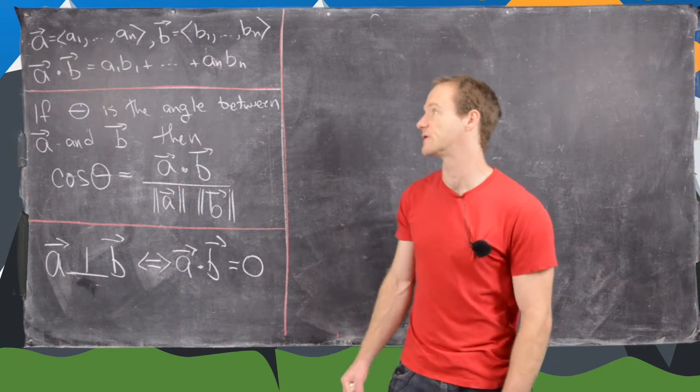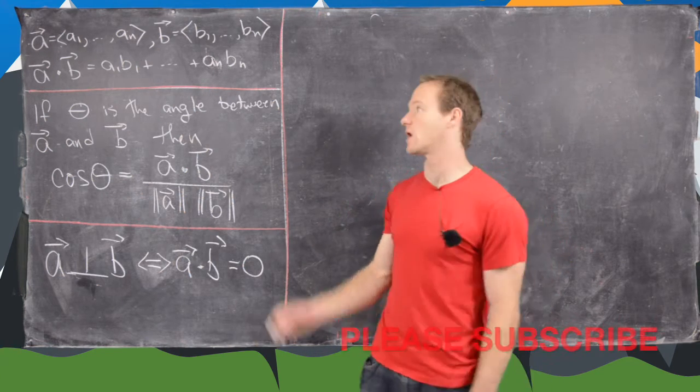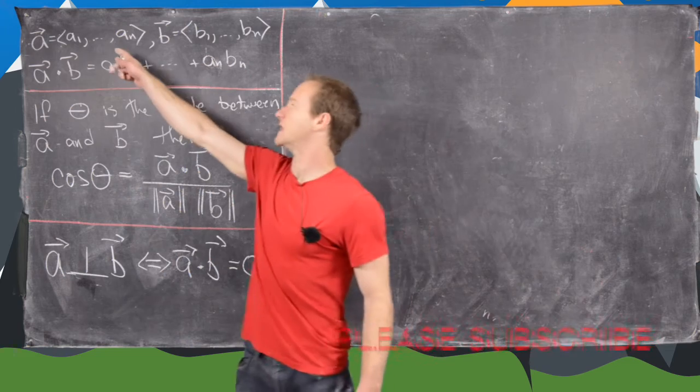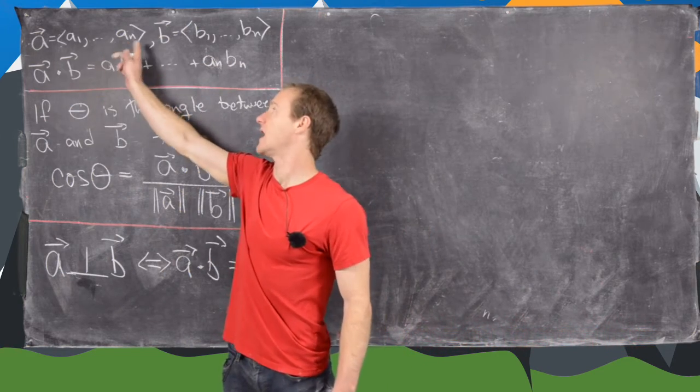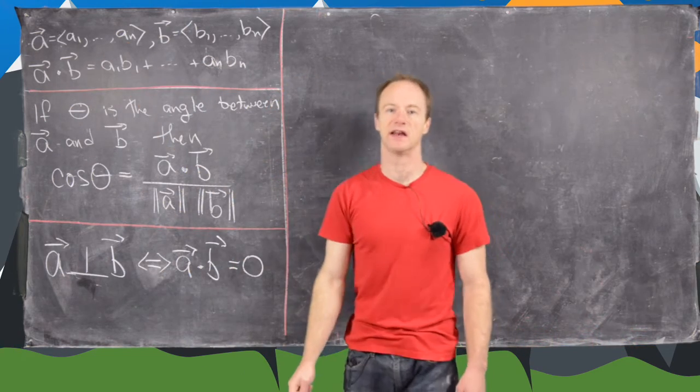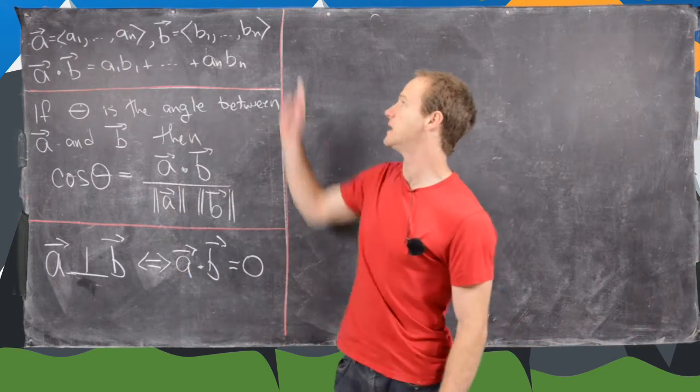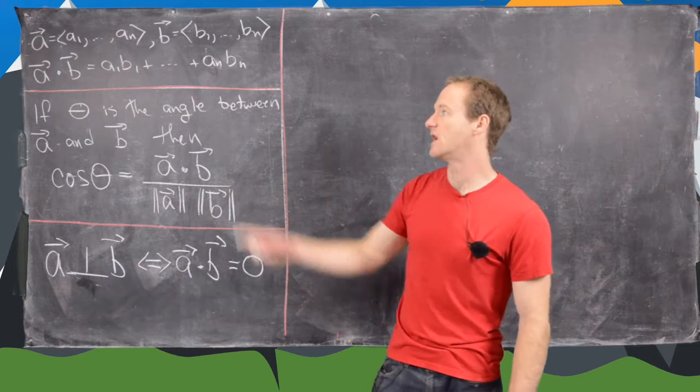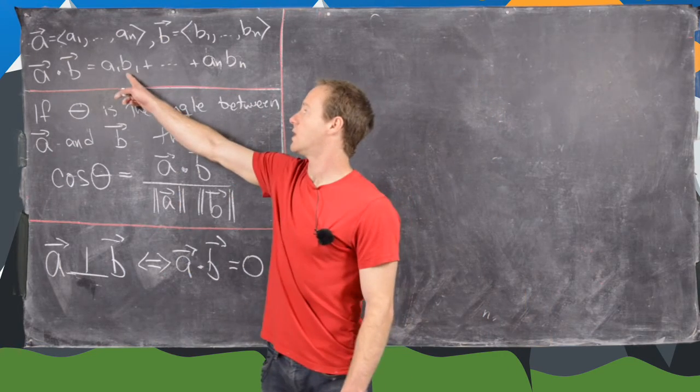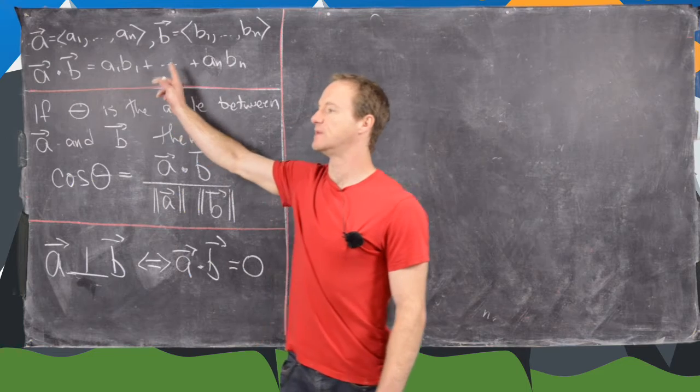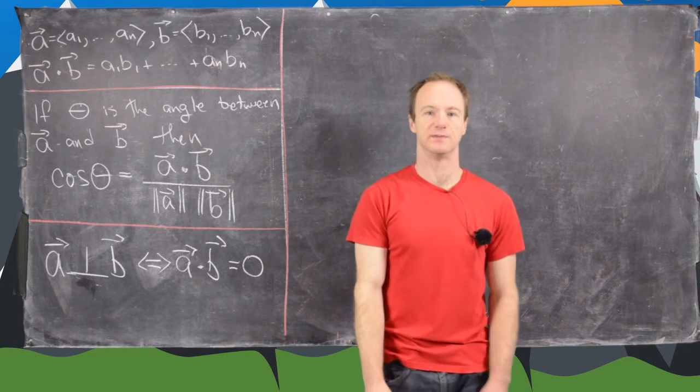In this video we're going to look at some applications of the dot product. So let's just recall its definition. If we have an n-dimensional vector a with components a1 through an, and an n-dimensional vector b with components b1 through bn, then a dot b equals a1 times b1 plus a2 times b2 all the way up to an times bn.